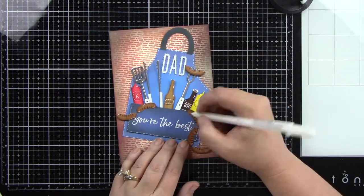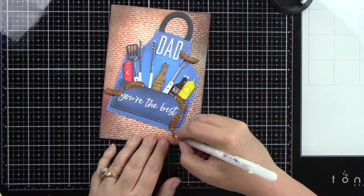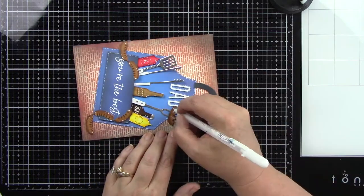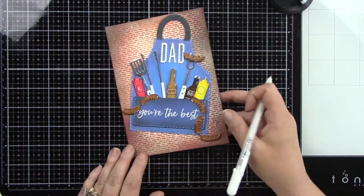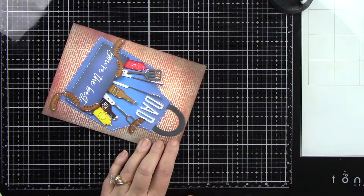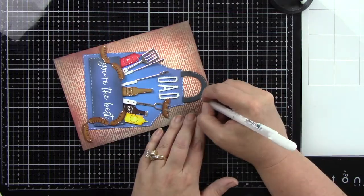I also added some highlights to the sausages, but I didn't need to add it to anything else because I'd already done that when I was coloring and adding the details to the bottles.